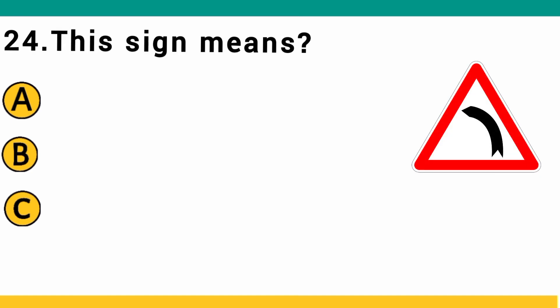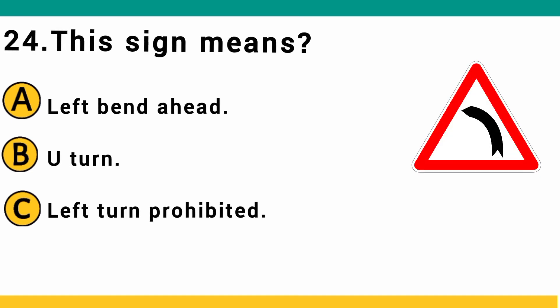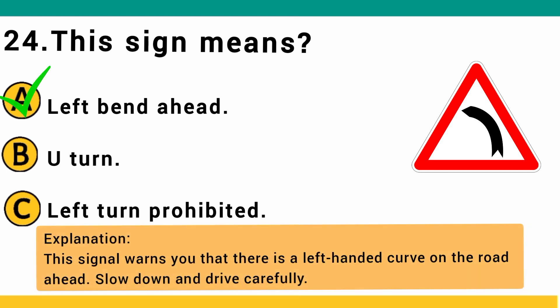This sign means: A) left bend ahead, B) U-turn, or C) left turn prohibited. The correct answer is A: left bend ahead. This sign gives notice that there is a left-hand curve on the road ahead — slow down and drive carefully.